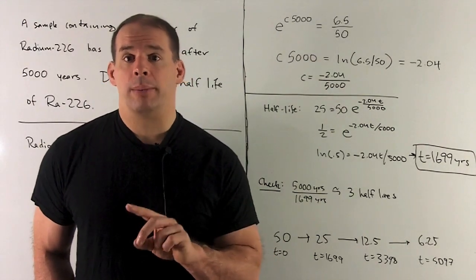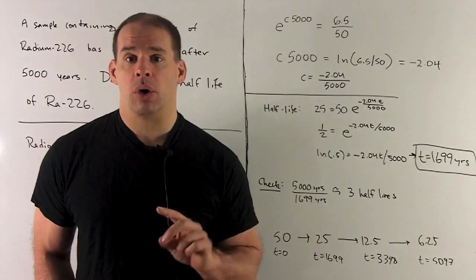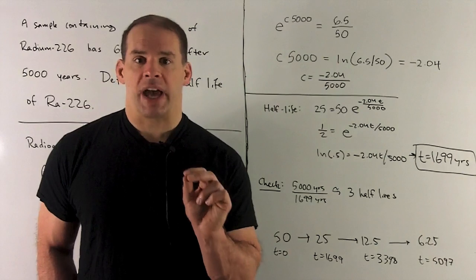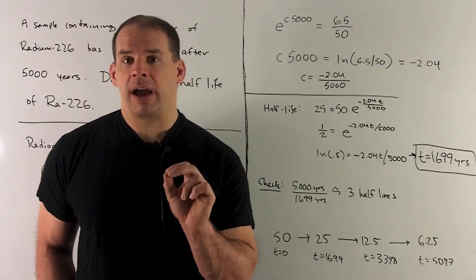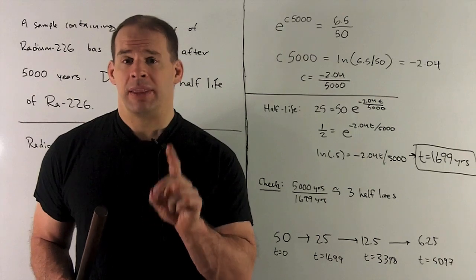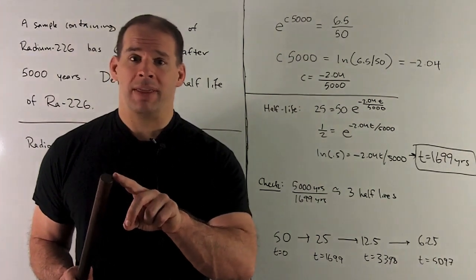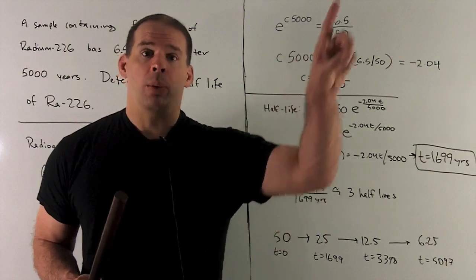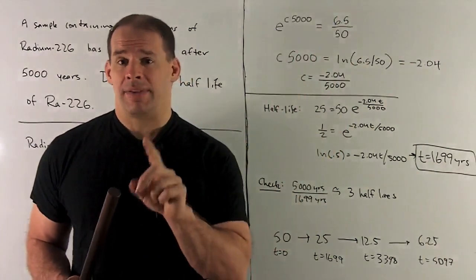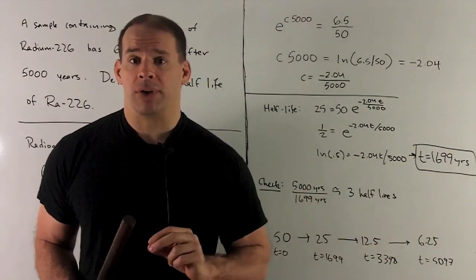When I clean things up, c equals minus 2.04 over 5,000. As a check, I want the minus sign in there. If I'm looking at an exponential equation with a positive exponent, over time that's going to grow — e to the x grows over time. If I have a negative exponent, it gets driven down to zero, which is what we want for decay. Think of that as e to the minus x — the graph just shoots down to zero as we go to the right.